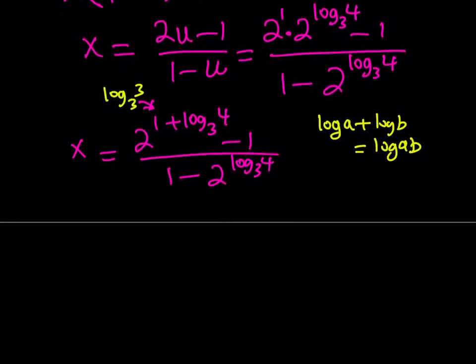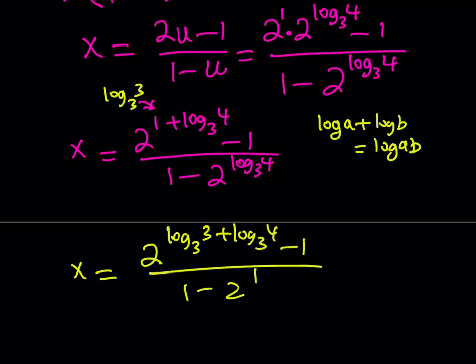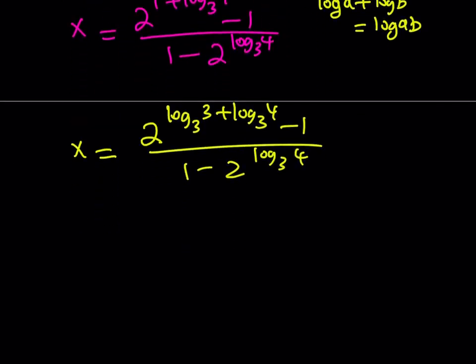So I can write x as 2^(log₃3 + log₃4) - 1 over 1 - 2^(log₃4). Some people may find this unnecessary, but I like to simplify things.